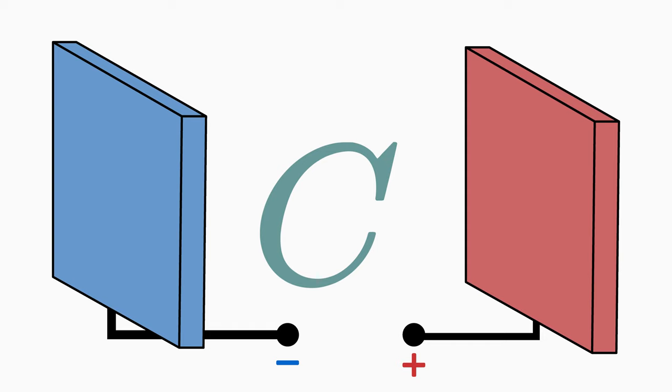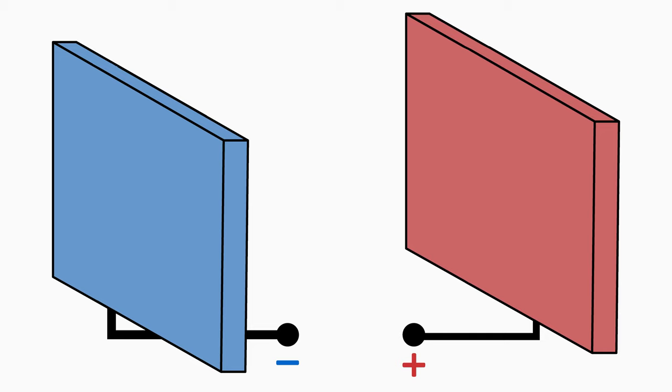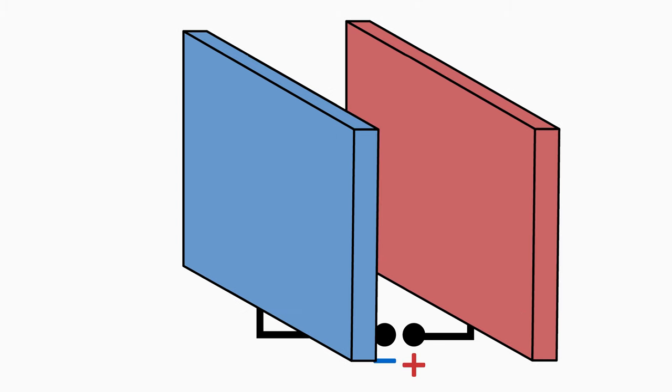To get the largest possible capacitance of the plate capacitor, you have to make the plate area as large as possible and the plate distance as small as possible.